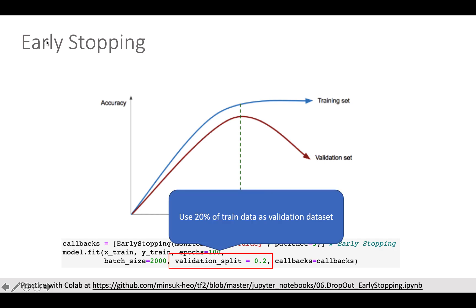Second is the validation split. Here in the example, I set the validation split as 0.2. That means I want to use 20% of training data as my validation data.